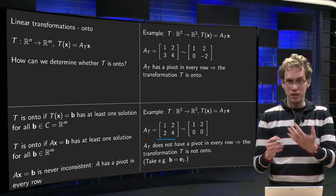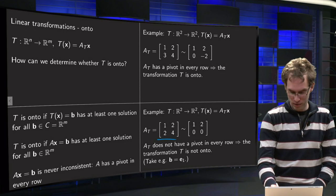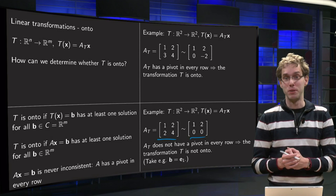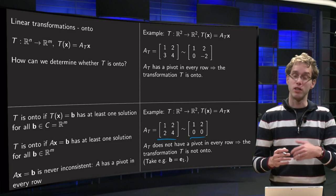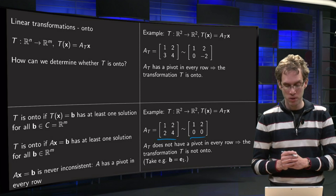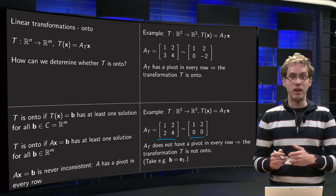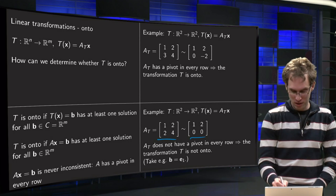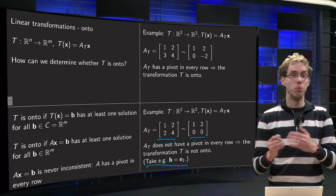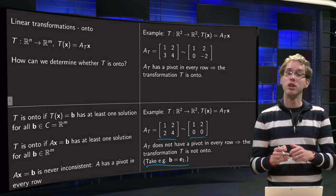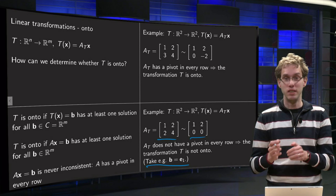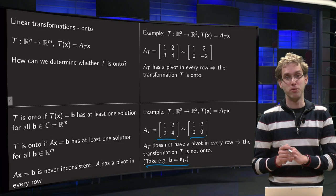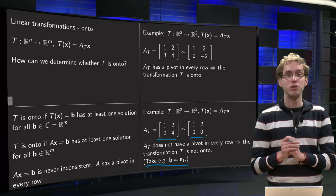let us do some row reduction again, and there we are, we have a row with only zeros, so not every row has a pivot, which means that our transformation will not be onto. And you can actually easily spot a b which you cannot reach. If you take for example b equals e₁, so the vector [1, 0], you will see that T(x) equals this e₁ has no solution, which means that the transformation is not onto.